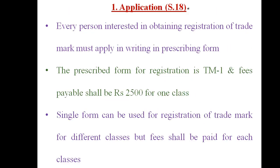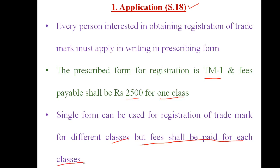According to Section 18, every person interested to register a trademark has to apply in a specified format known as TM1, and has to pay fees of rupees 2500 for one class. There are different classes — fees must be paid as per the number of classes for which registration is sought. A single form can be used for multiple classes, but fees shall be paid for each class.